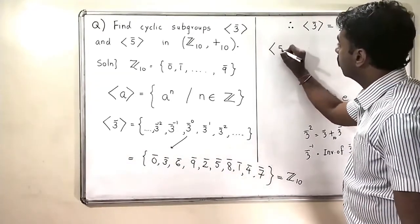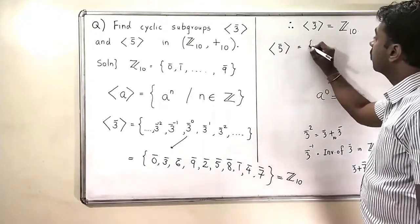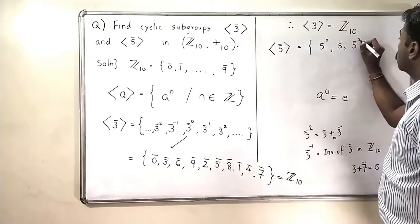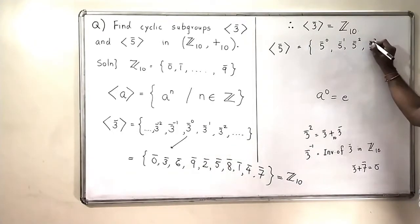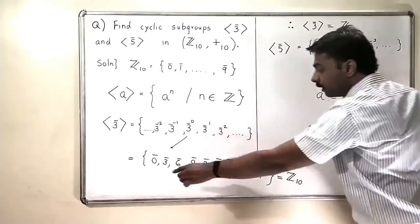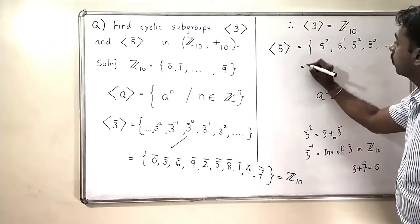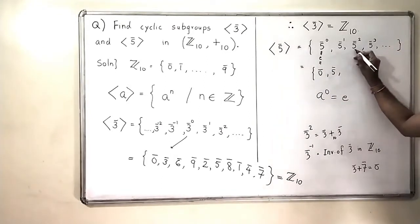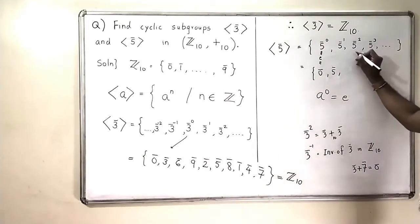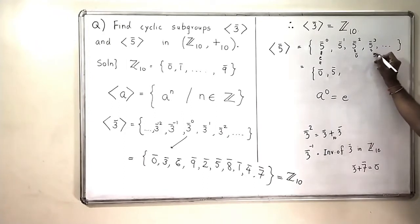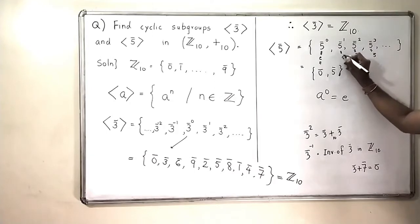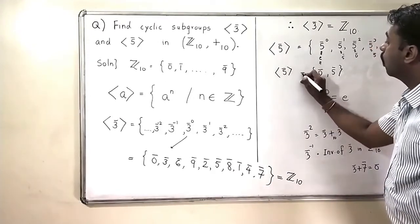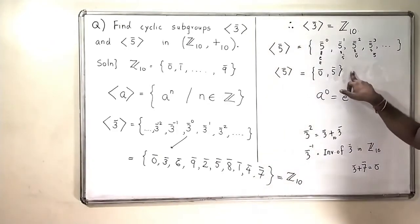Now the cyclic subgroup generated by 5̄: we compute 5̄ raised to 0, 5̄ raised to 1, 5̄ raised to 2, 5̄ raised to 3, and so on. The negative powers will be covered by the positive ones. 5̄ raised to 0 is 0̄ (identity). 5̄ raised to 1 is 5̄. 5̄ raised to 2 is 5̄ plus 5̄ = 10̄ = 0̄. 5̄ raised to 3 is 15̄ = 5̄. So we get the repeating pattern 0̄, 5̄, 0̄, 5̄. Therefore, the cyclic subgroup generated by 5̄ contains only 2 elements: 0̄ and 5̄.